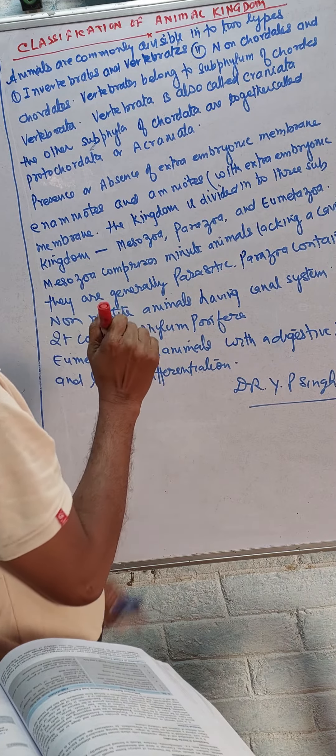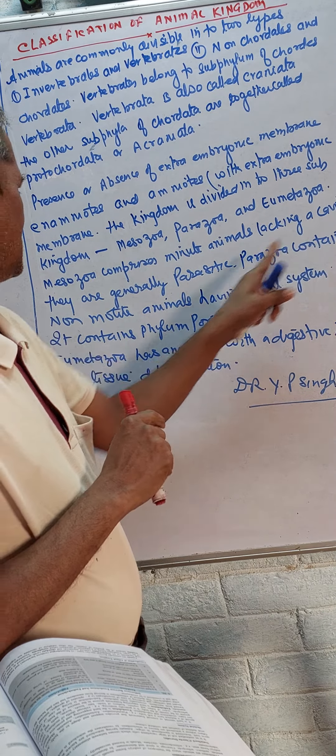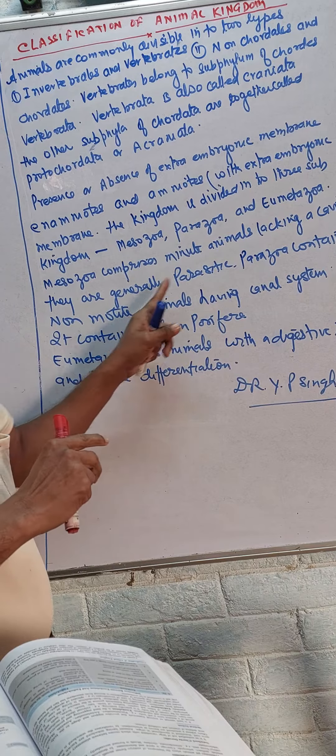Mesozoa comprises minute animals lacking a body cavity. They are generally parasitic.